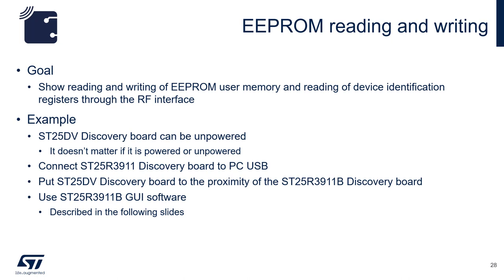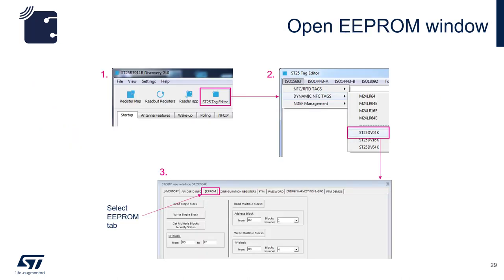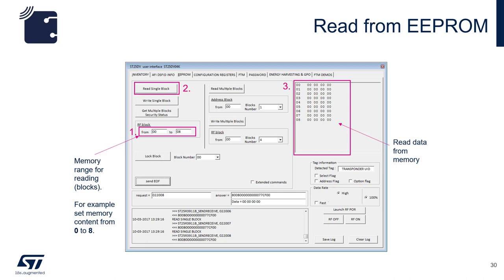Then run the SD25R3911B GUI software. First, click on the SD25 tag editor button. Pull down the menu under the ISO 15693 tab. Then click on dynamic NFC tags and select SD25DV04K. That will open up another GUI window. Now click on the EEPROM tab. In the RF block window, select block address from 0 to 8. Then click on the read single block button as denoted by step number 2. The content of the memory of all 9 blocks will be displayed on the right side of the screen.